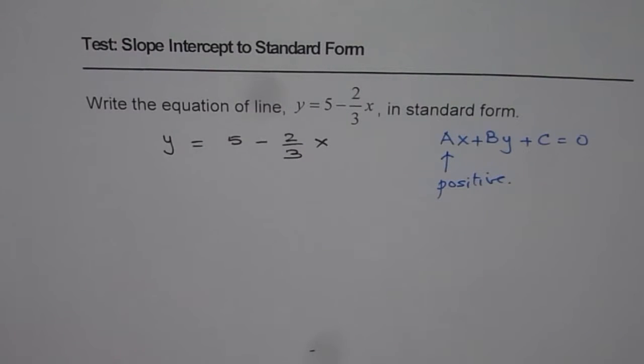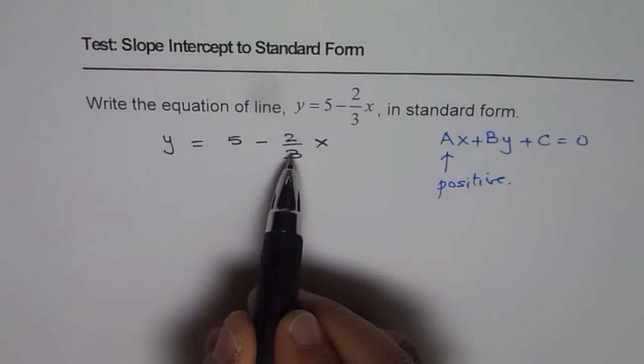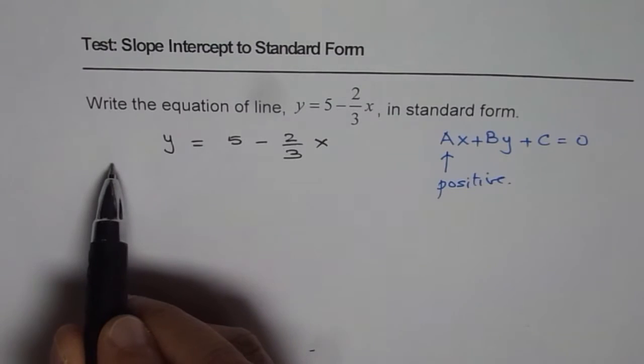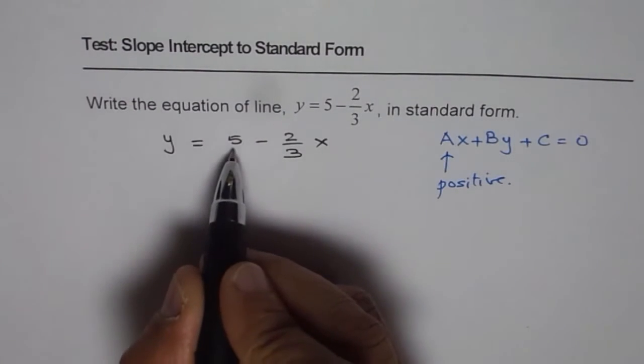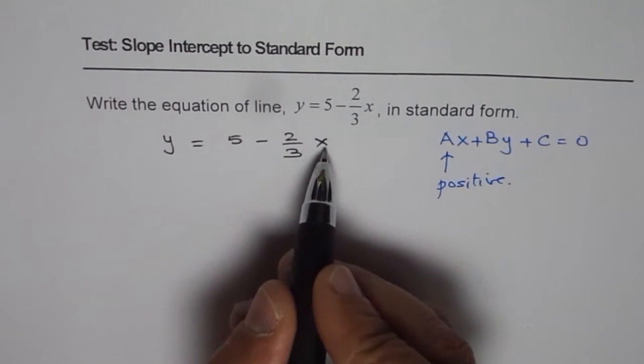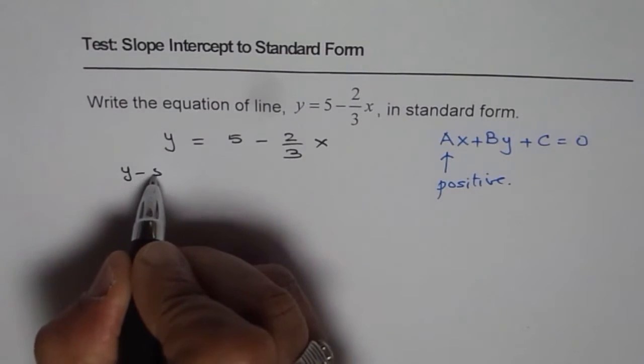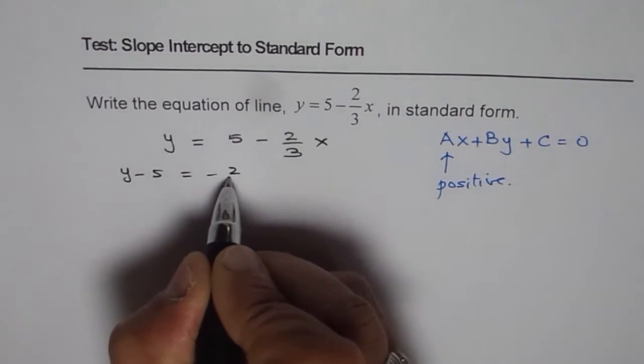To do so, in this particular case, we'll bring all the terms to the left side. Take away 5 from both sides and we'll add 2 over 3x. Once you take away 5, we get y minus 5 equals minus 2 over 3x.